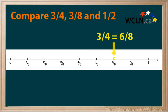It is easy to see that three quarters is larger than one half, which is larger than three eighths, because of their position on the number line.